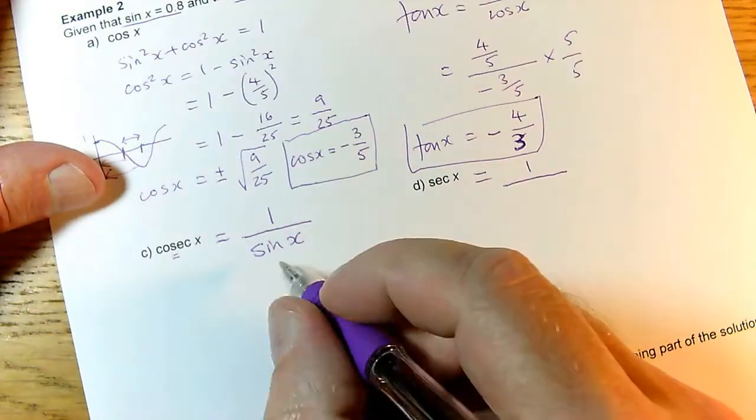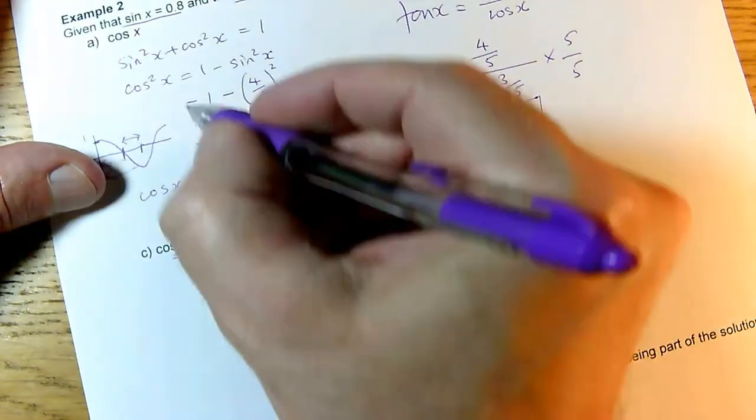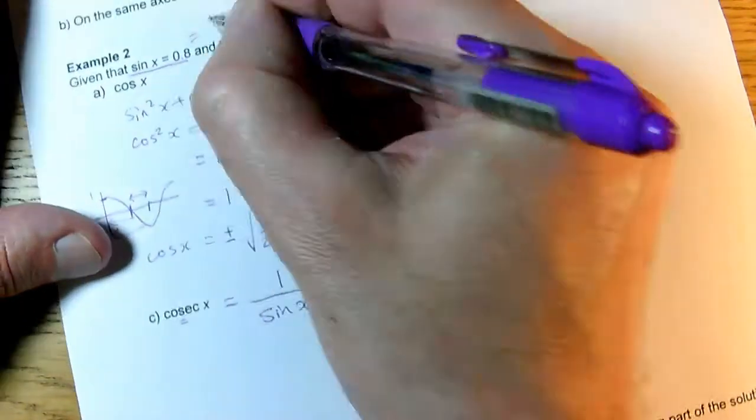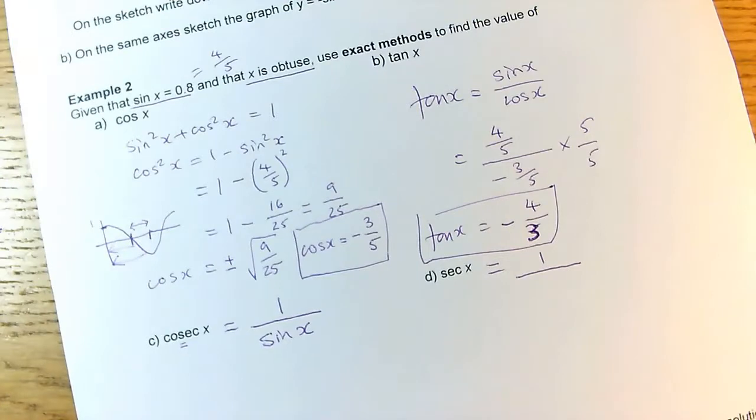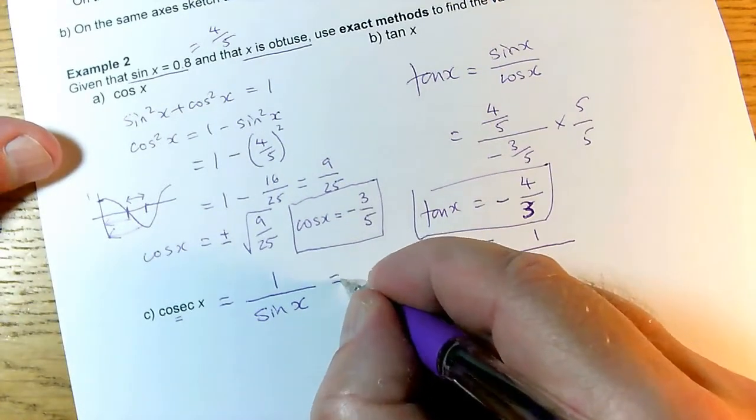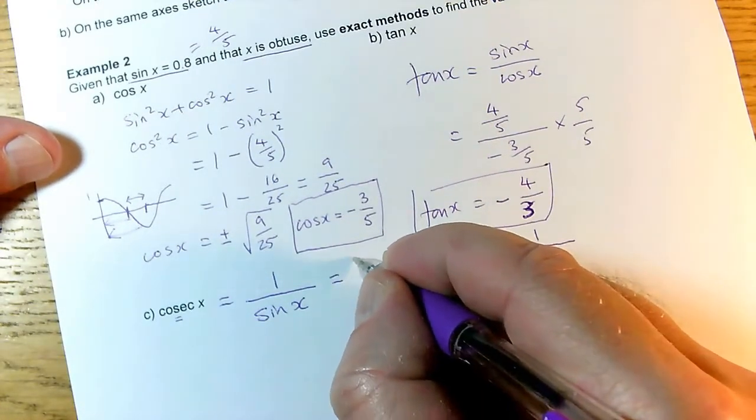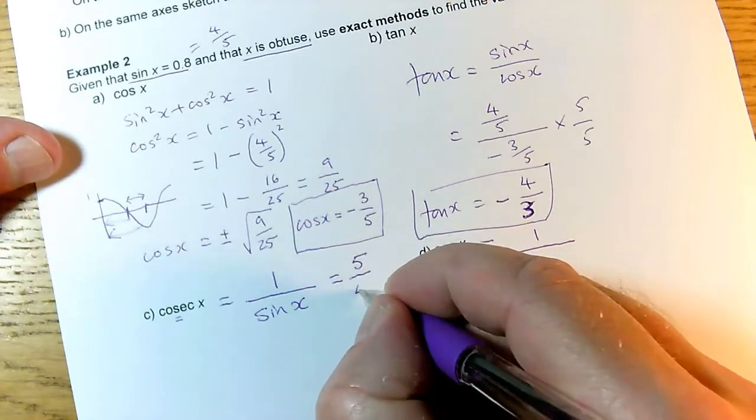But sin x was 4/5. This 0.8 I've been using all along equals 4/5. How do I find the reciprocal of a fraction? I turn it upside down. So the reciprocal of 4/5 is 5/4.